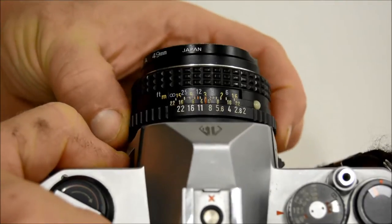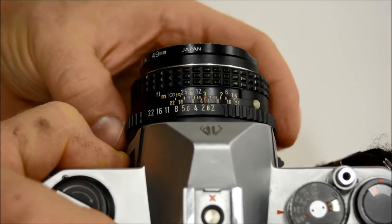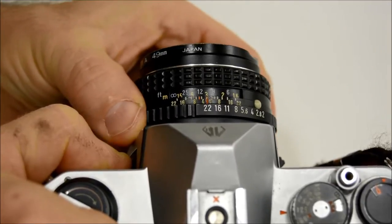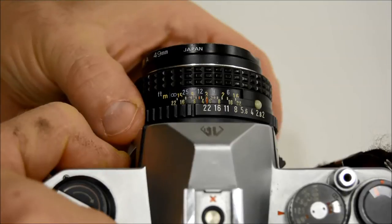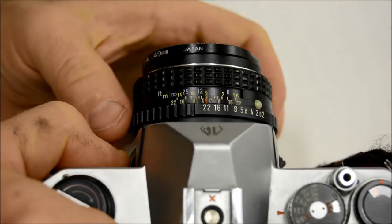The aperture on your lens is this ring right here, and it goes from, in a bright lens, it goes from f2 all the way to f22, and it represents the fraction of light that's actually coming in the front of the lens and exiting the back of the lens.